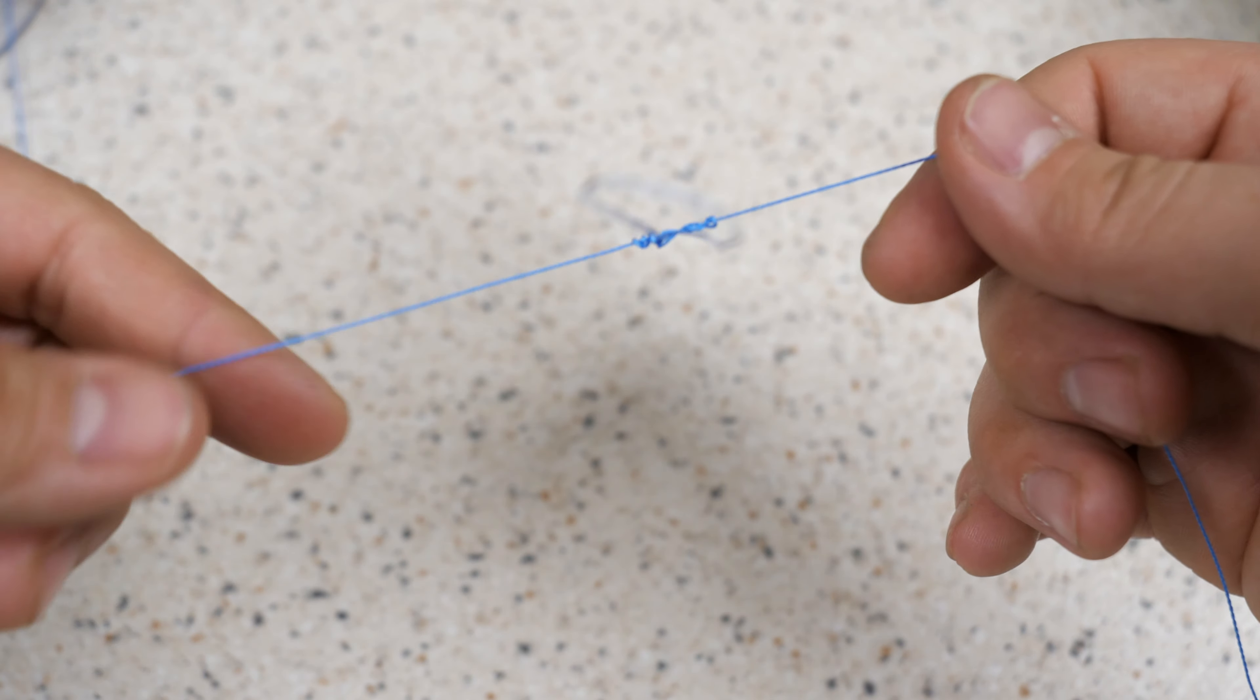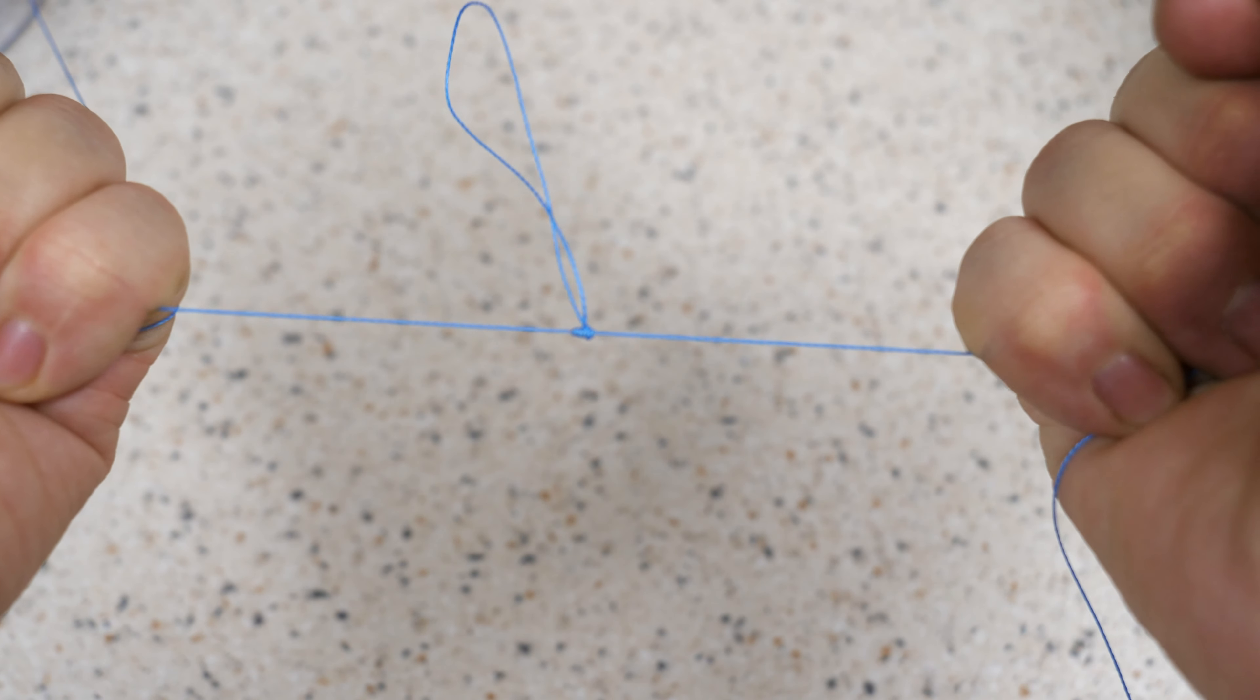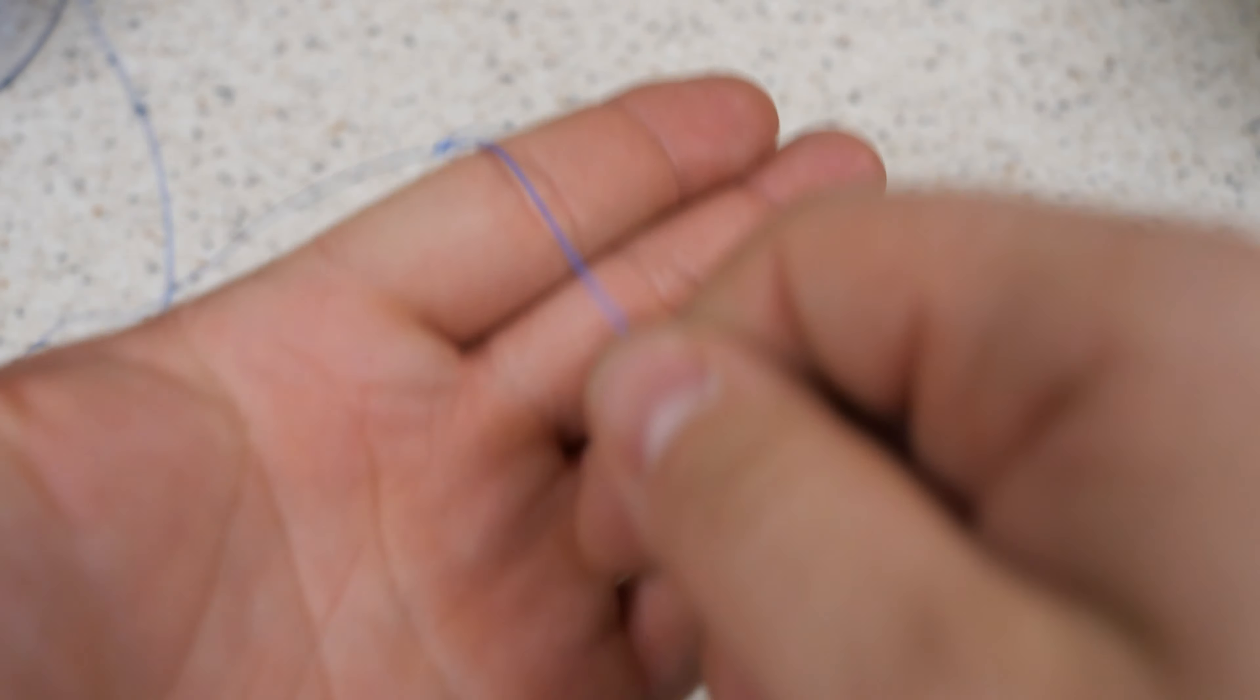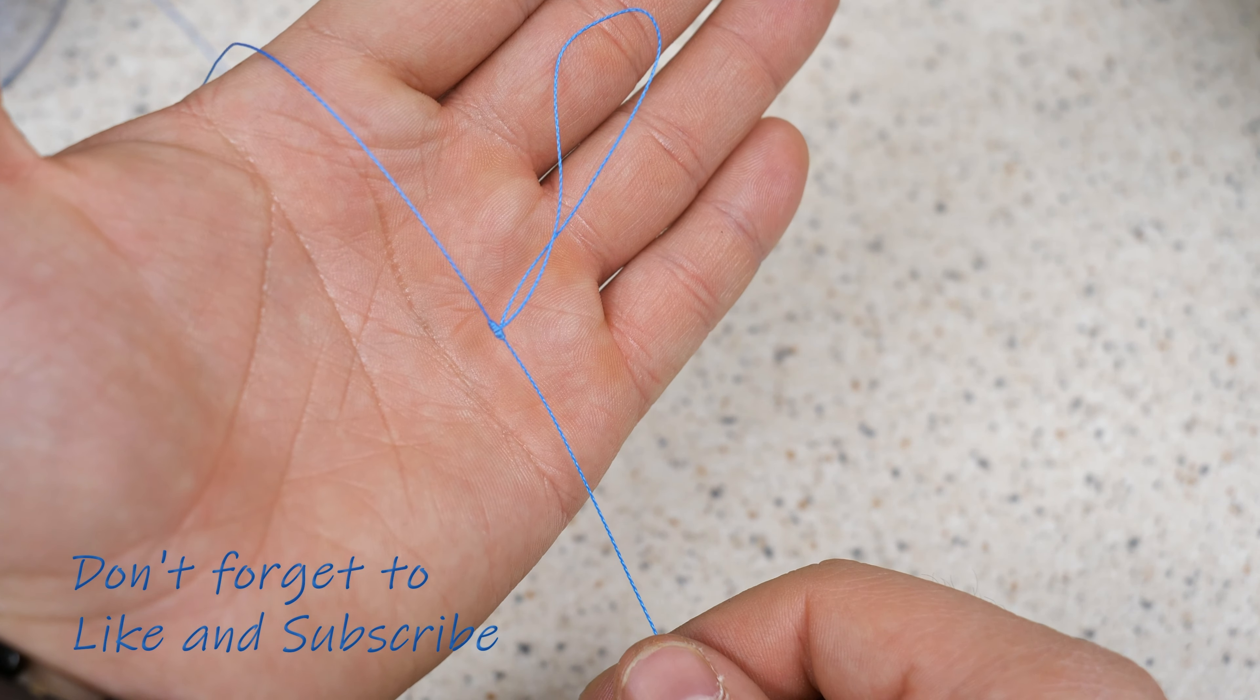At this stage you can release the loop and start pulling from the sides. There you have it, you just created your dropper loop.